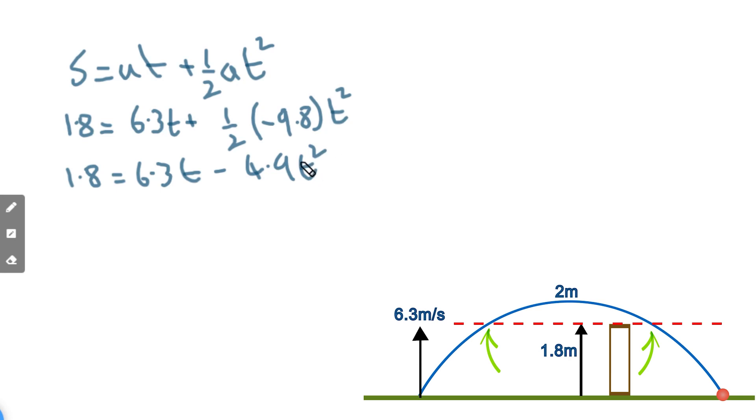set this equal to zero, or rearrange it rather so that it's equal to zero. So first of all I'll take the 4.9, add it to both sides, so then we get 4.9t squared take away 6.3t plus 1.8 all equals zero. So now we have got our quadratic equation.